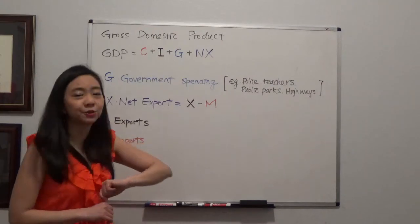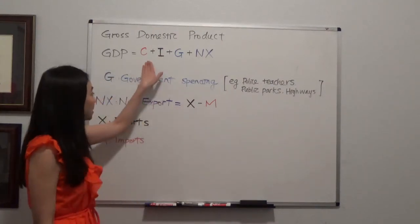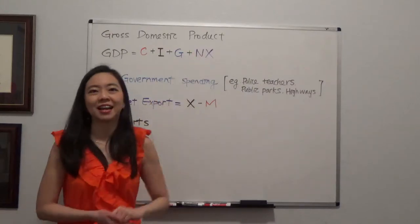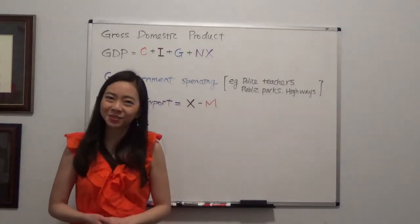So that is why GDP is equal to consumption plus investment plus government spending plus net exports. I hope this helps and I'll see you next time.